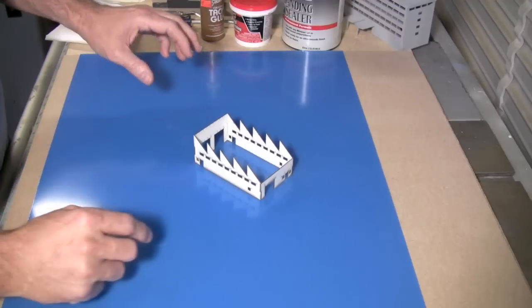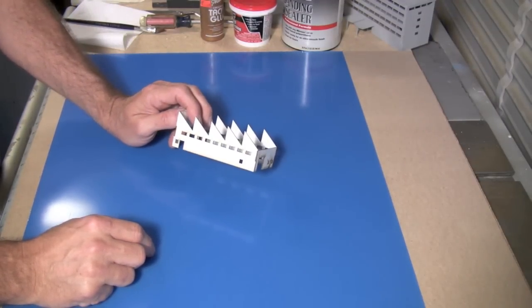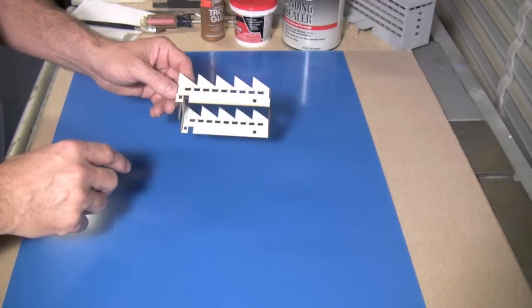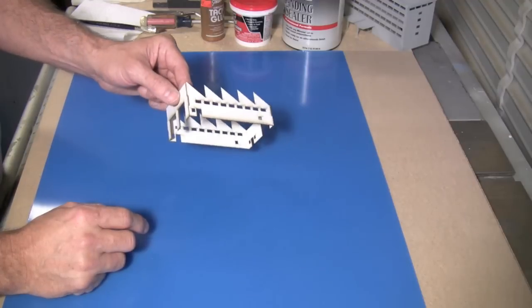Now, another thing, once you've got this thing glued together, what I've been doing with mine is I've been spraying it with a primer, spraying the whole thing, just to kind of seal the mat board or paper, if you will, card stock, whatever you like to call it.